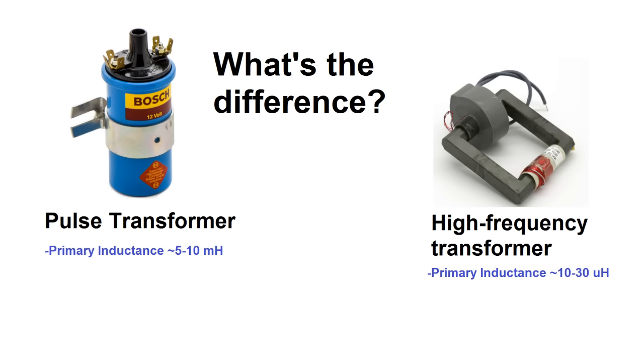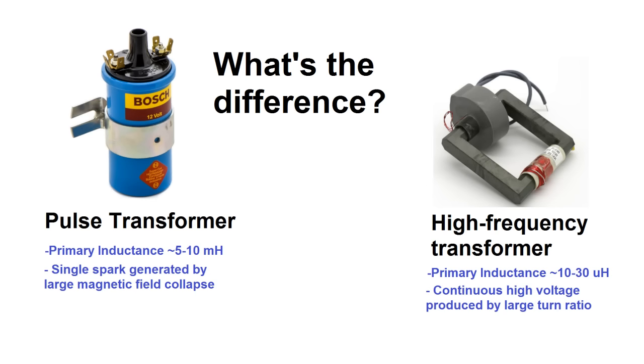Instead, it uses a high inductance primary to create a relatively large magnetic field when current flows through it. When the current is suddenly shut off, the large magnetic field collapses, and the sudden collapse creates a high voltage pulse. This is perfect for low frequency applications, like a gas engine, where pulses are only occurring maybe 10 or 20 times per second.